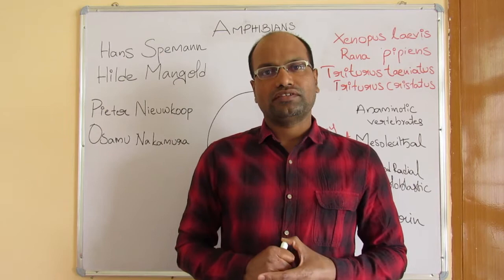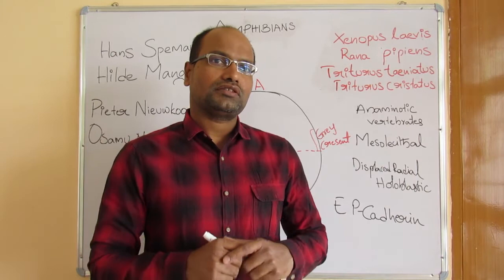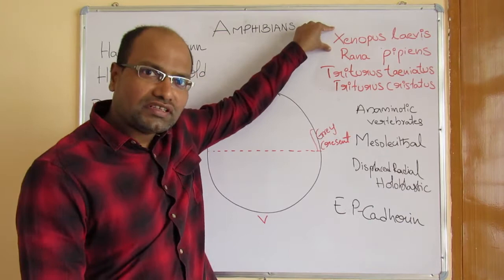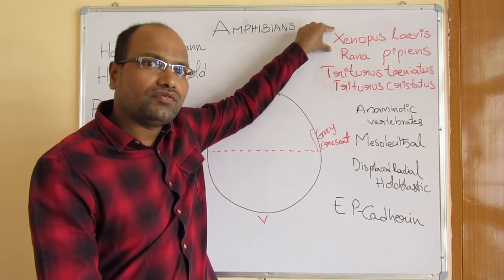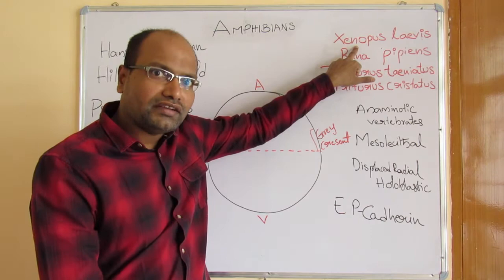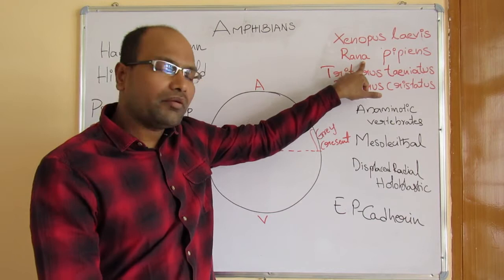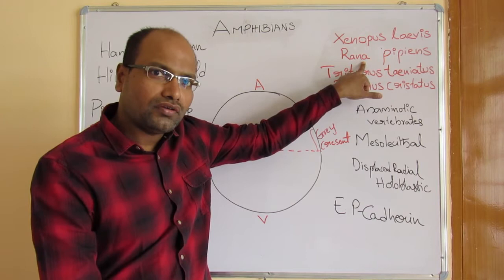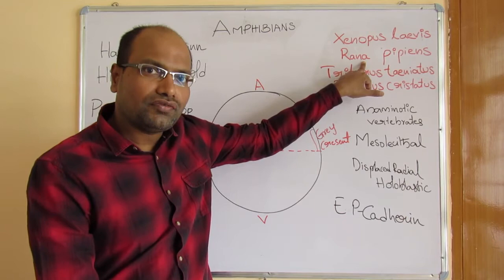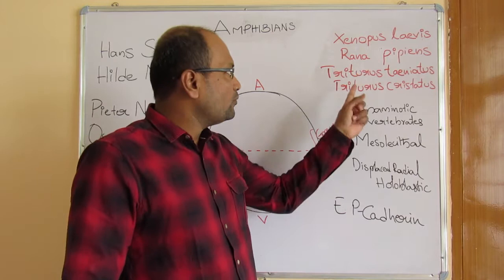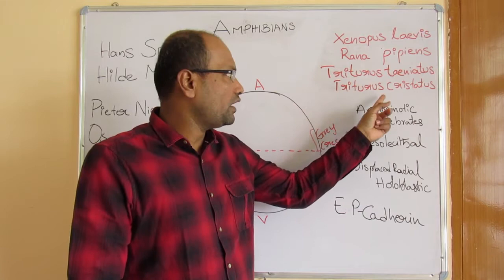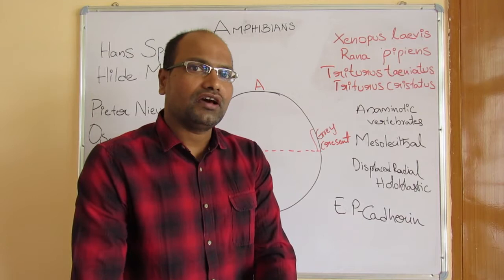First, we will look at the species used for developmental studies. Xenopus laevis is a very commonly used species in the developmental biology of amphibians, also known as the African clawed frog. Then we have Rana pipiens, the northern leopard frog, which is also commonly used in amphibian developmental biology.